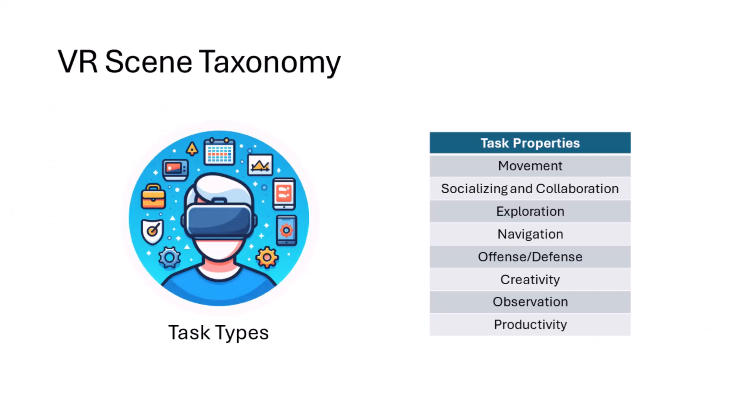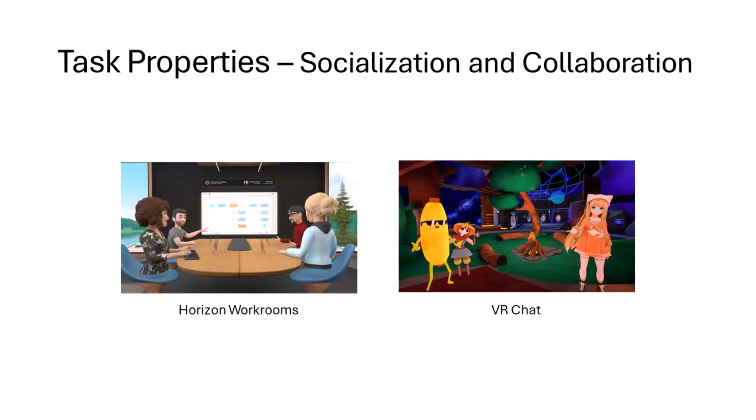Since the way people interact in a scene is affected by their task, we identified eight task types based on our review of VR applications. The eight task types are: movement, socializing and collaboration, exploration, navigation, offense-defense, creativity, observation, and productivity. Each task introduces interesting questions on how we should think about constructing scene viewing techniques based on the visual layout.